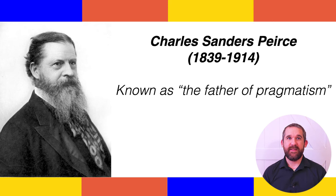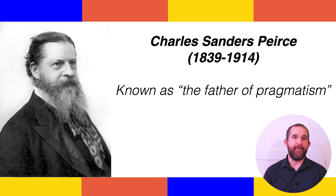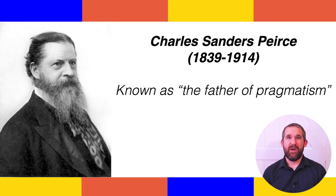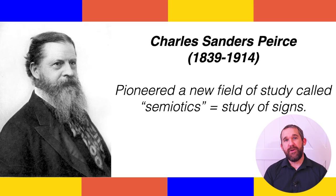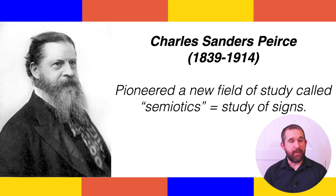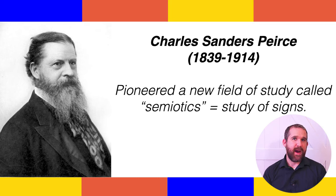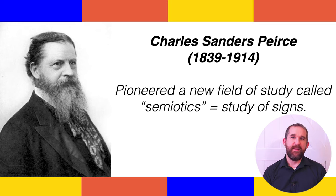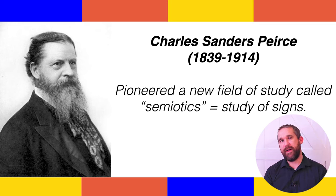Charles Sanders Peirce is an American scientist, mathematician, logician, and philosopher who is known as the father of pragmatism along with his friend William James. Logician is the study of logic, which was essentially the study of words, their meanings, and reason. Peirce pioneered a new field of study called semiotics, which is the study of signs. Peirce and his friend William James pioneered the philosophy of pragmatism, which was later called functional contextualism, that led to the contextual sciences that acceptance and commitment therapy and relational frame theory have developed from.